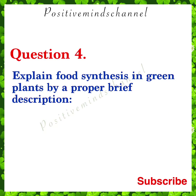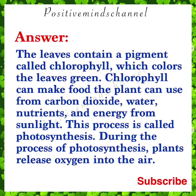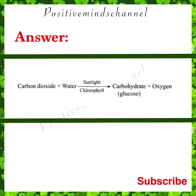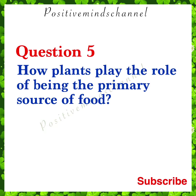Question 4: Explain food synthesis in green plants with a brief description. Answer: The leaves contain a pigment called chlorophyll which colors the leaves green. Chlorophyll helps the plant make food from carbon dioxide, water, nutrients, and energy from sunlight. This process is called photosynthesis. During photosynthesis, plants release oxygen into the air.